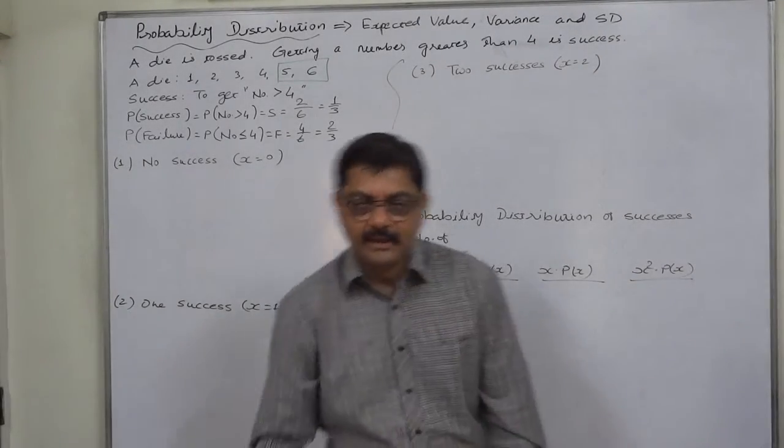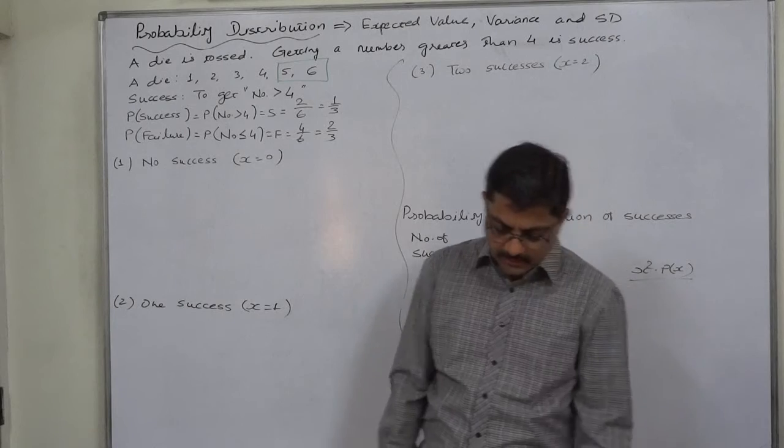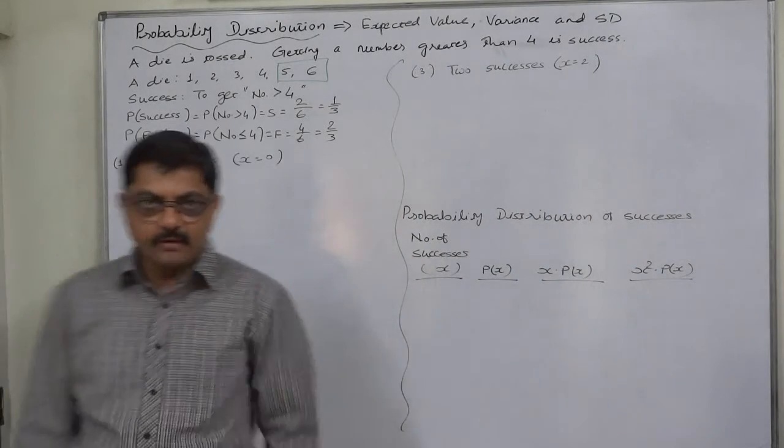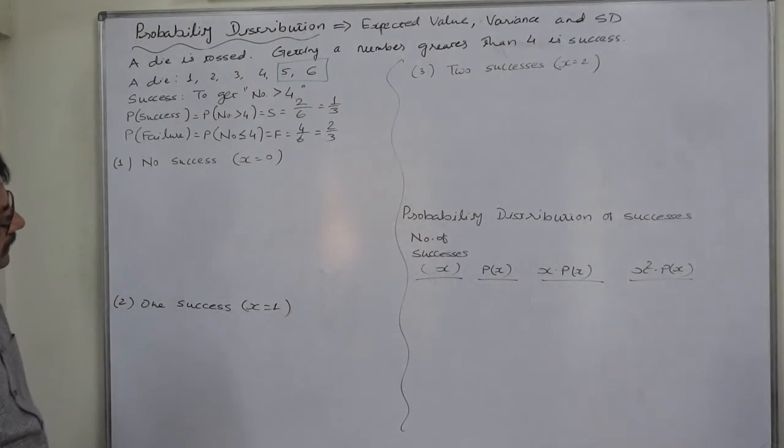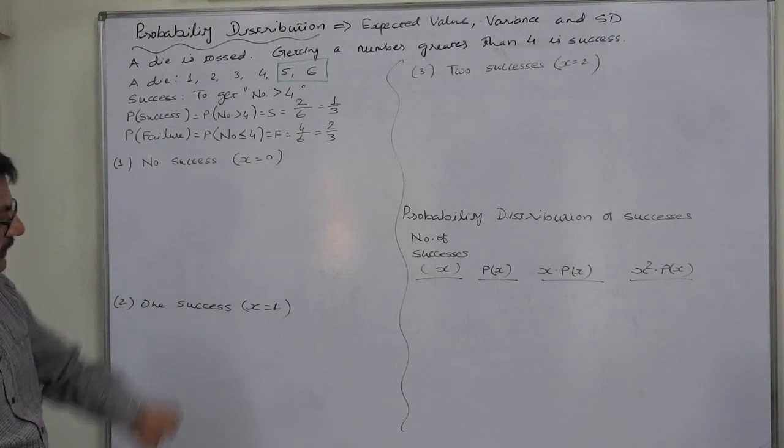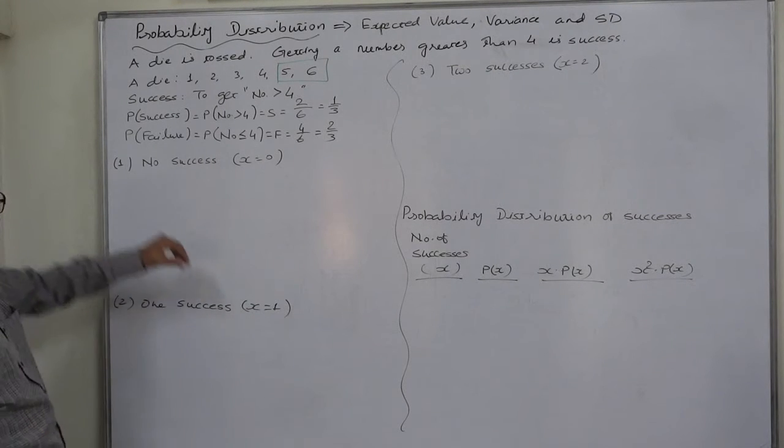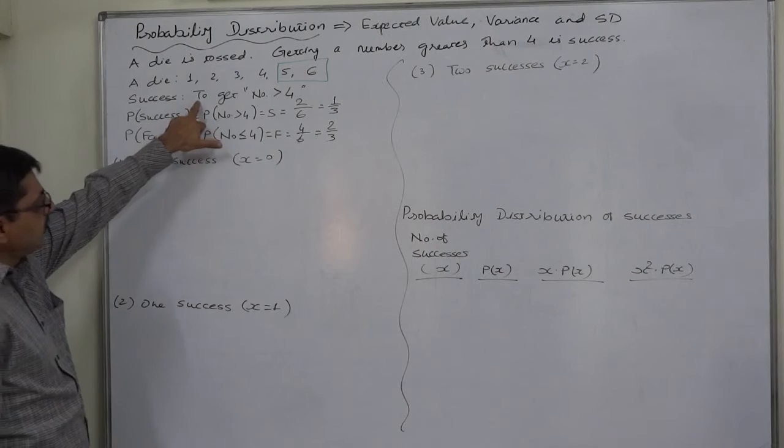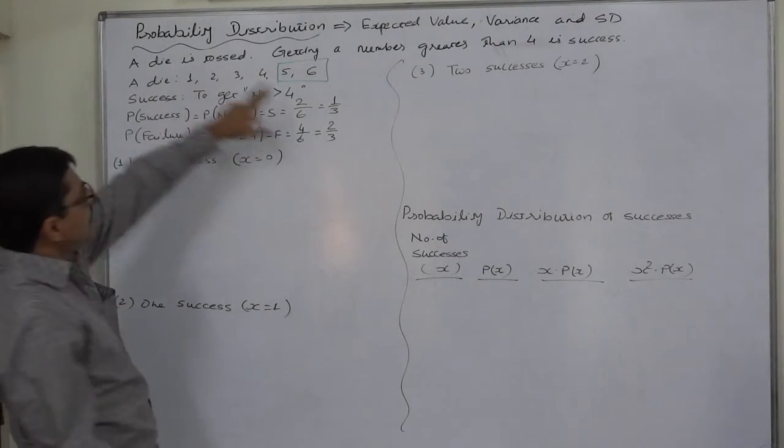Hello and welcome to a new case in probability distribution. In this case, we are going to construct a probability distribution of number of successes, where the success is to get a number greater than 4 when a die is tossed twice.